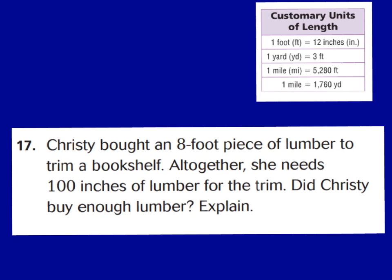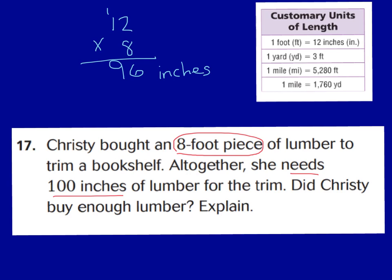Let's take a look at number 17. Christy bought an 8-foot piece of lumber to trim a bookshelf. Altogether, she needs 100 inches of lumber for the trim. Did Christy buy enough lumber? She needs 100 inches and she bought 8 feet. Since 1 foot equals 12 inches, we do 12 times 8, which equals only 96 inches. She doesn't have enough because she needs 100 inches. She would still need 4 more inches, therefore she did not buy a big enough piece — perhaps she should have bought a 9-foot piece.